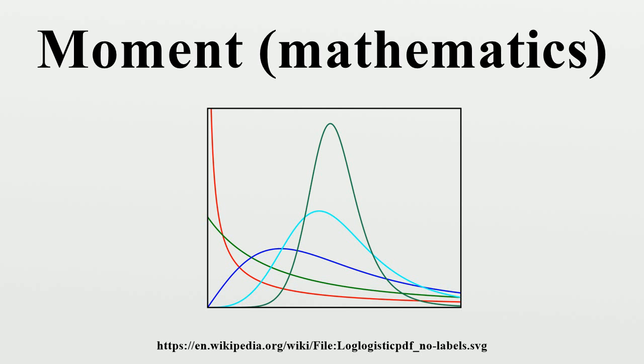The third central moment is a measure of the lopsidedness of the distribution. Every symmetric distribution will have a third central moment, if defined, of zero. The normalized third central moment is called the skewness, often gamma.